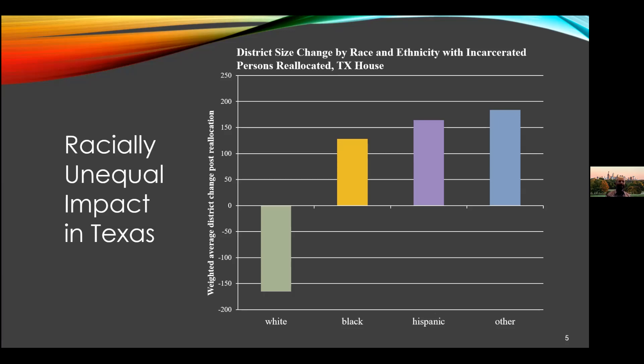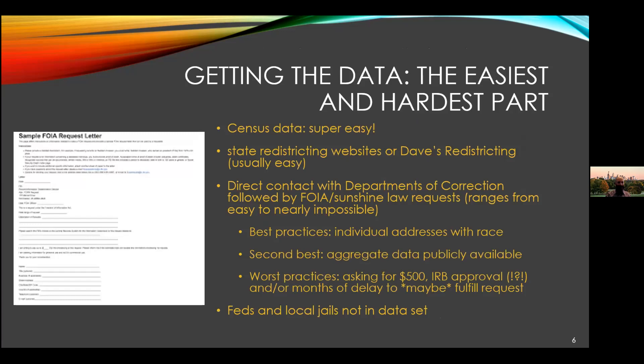So how do we get to these graphs? That's what today's session is about — give you 20, 30 minutes of under the hood. How do we get to the point where we can confidently say that this is our best estimate — often very conservative, not conservative in the liberal/conservative sense, but conservative in that we are underestimating the local impact of prison gerrymandering with some of our estimations.